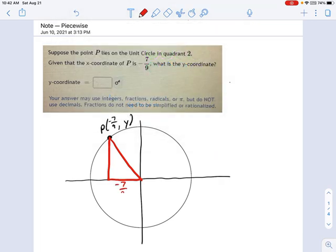The x side is negative 7 ninths, because it's going to the left by 7 ninths. The y side, I don't know. What's the hypotenuse?